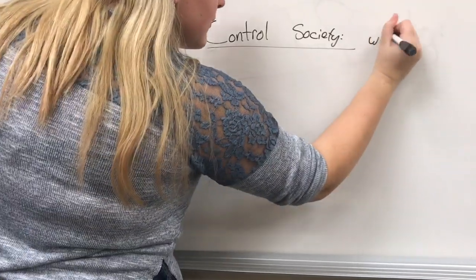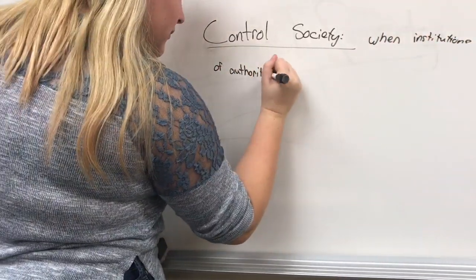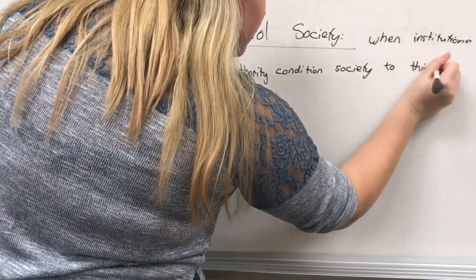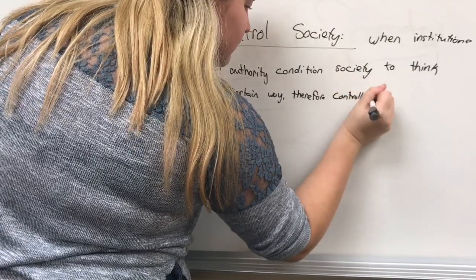Control society is centered around the concept that institutions of authority, such as schools, are conditioning us as a society to think in a certain way, therefore controlling our actions.